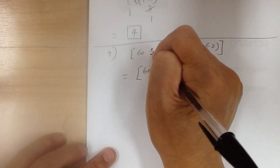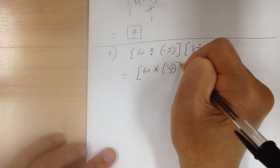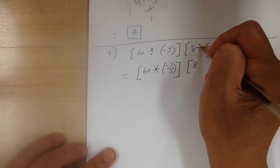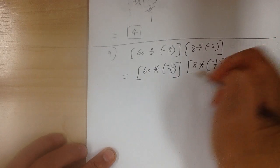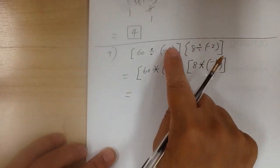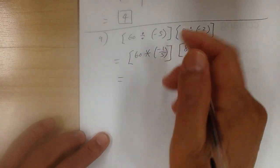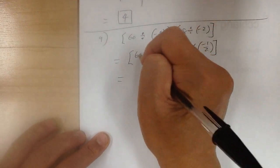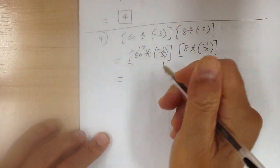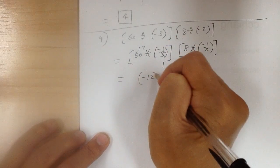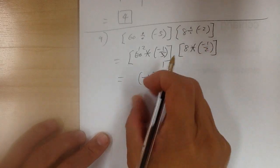So 60 — division, change into multiplication, and you have to flip it over. Do the same thing over here: 8, division, change into multiplication, and you flip it over. So first step: change all the division into multiplication. Then 5 and 60 — you can divide by 5, you get 1; divide by 5, you get 12. So this becomes negative 12.